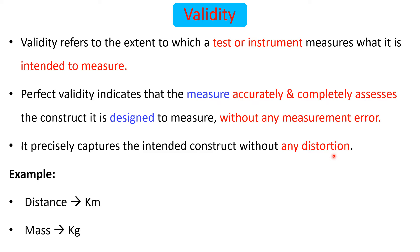For example, distance is measured by kilometers and mass is measured by kilograms. Kilometer is a valid measure for distance, whereas kilometer is not a valid measure for mass. So to measure distance, we have to use kilometers because it is the valid measure.